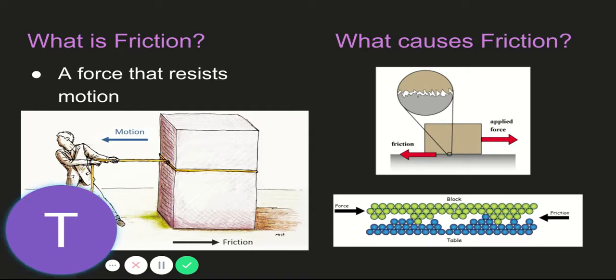There are attractions due to the particles that make up those substances, and those attractions kind of keep or pull those two substances together and resist their motion as well. So friction is caused due to those intermolecular forces and also due to imperfections, microscopic imperfections in the surface.